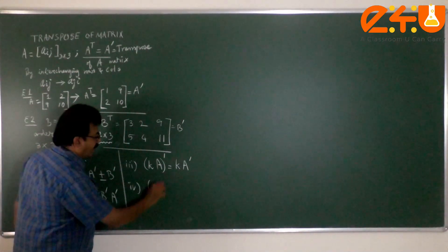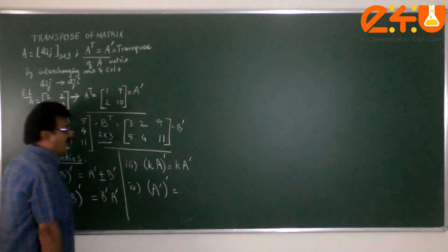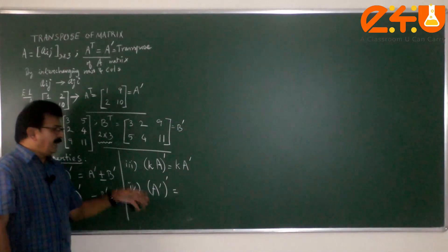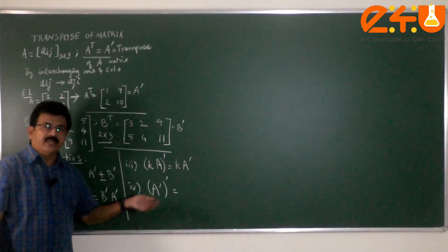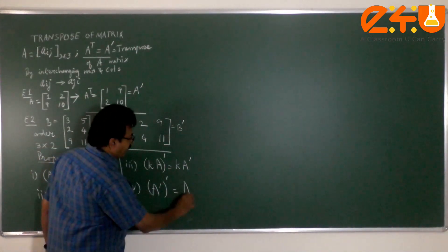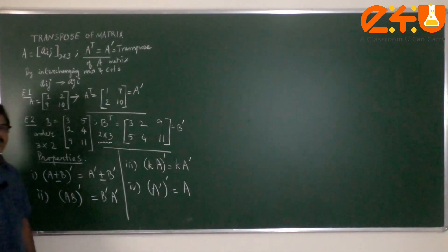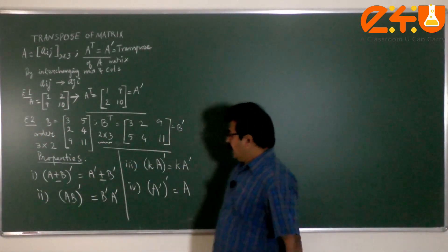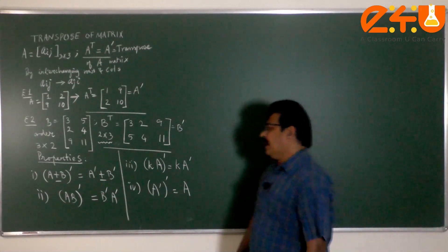And one more, what will happen to the transpose of the transposed matrix again? A matrix is given, you have already taken a transpose. Once again, I am doing the transpose. We get back the original matrix. That is property 4: A transpose, whole transpose is A.